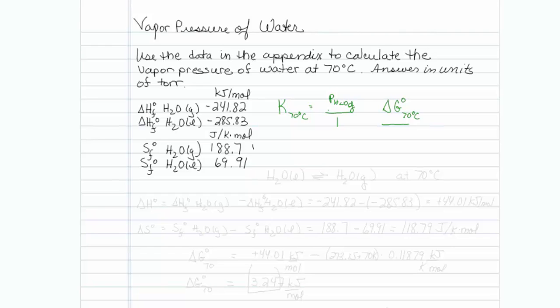So let's do that. Our reaction is H2O liquid in equilibrium with H2O gas. And we'd like to know what's that equilibrium at 70 degrees Celsius.